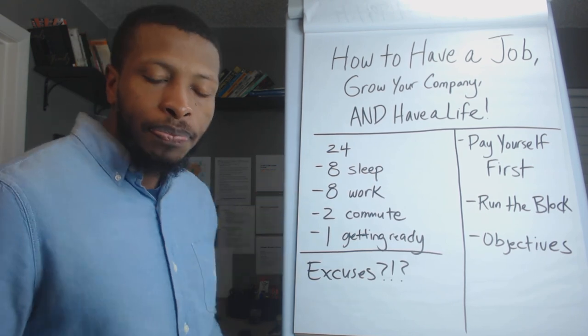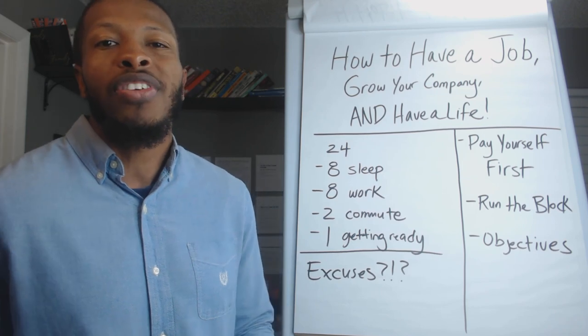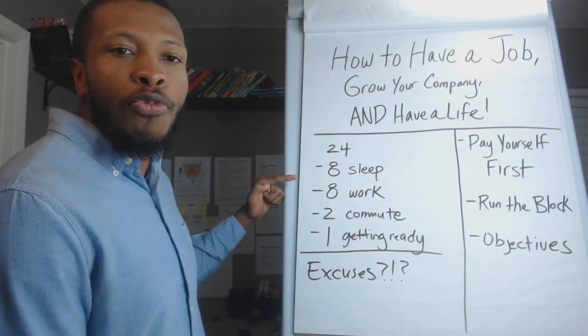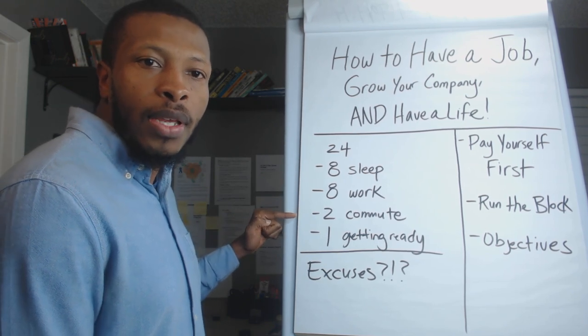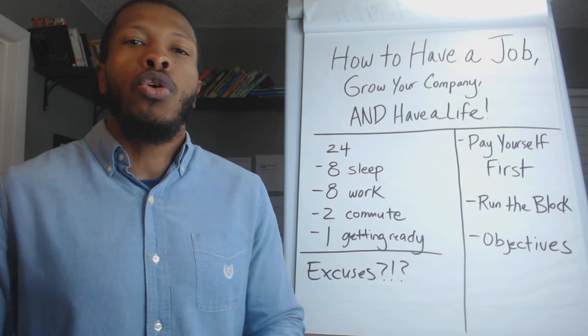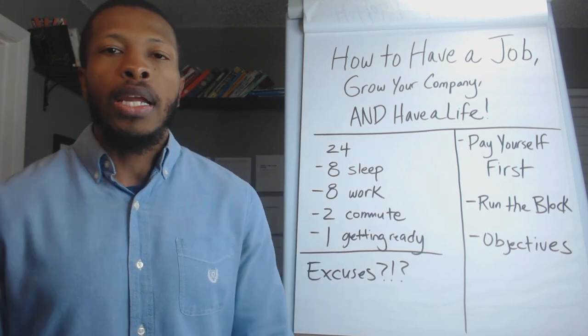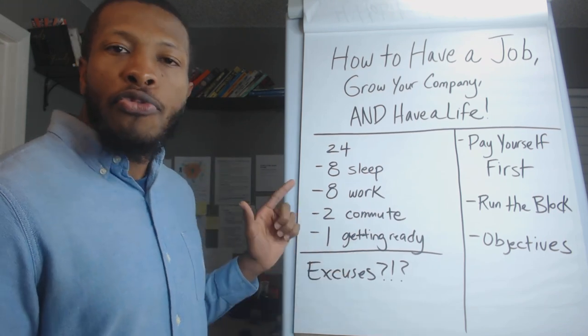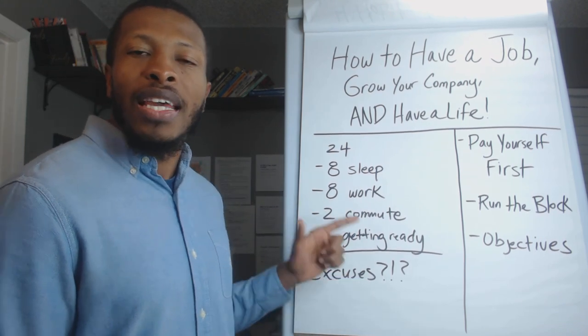Now, let's say that you have a two-hour commute, which is what the average person in America has coming to and from work. Now you've went down from eight to six. And maybe it might take you about an hour or so to get ready to go to work, putting on your clothes, showering, getting some breakfast.